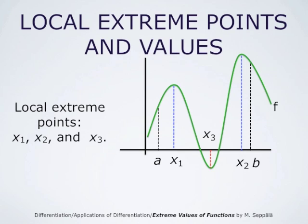These points x1 and x2 are local maximum value points, and x3 is a local minimum value point. If the task was to determine the maximum and minimum value of this function over the interval from a to b, we would simply select the largest and the smallest of these local extreme values. The largest in this case would be the value of f at x2, and the smallest would be the value of f at x3.